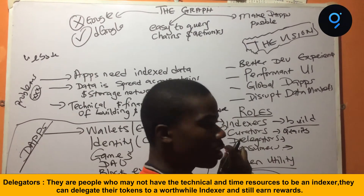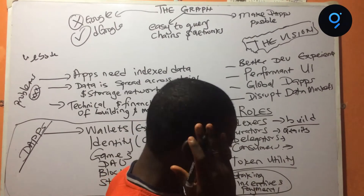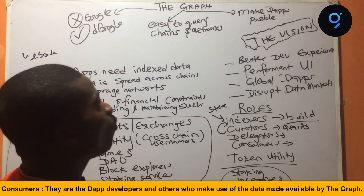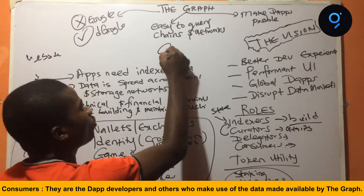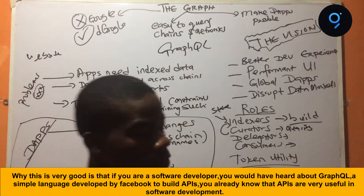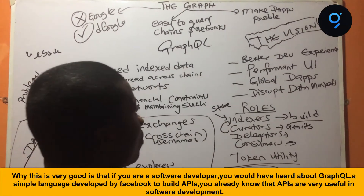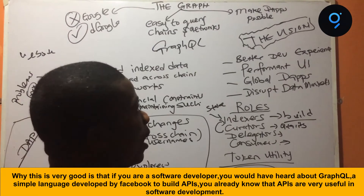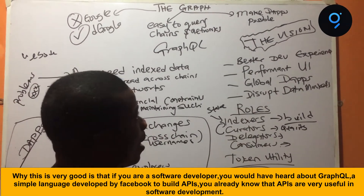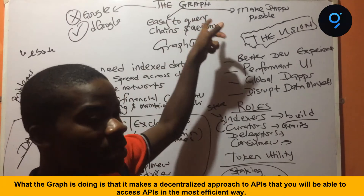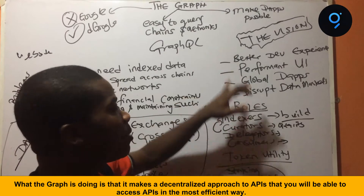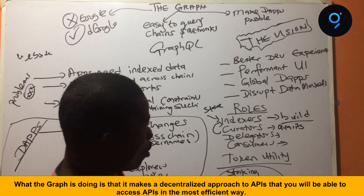And the next people are actually the customers or the consumers. They are the app developers and the rest of them that will want to plug into this API. And one of the reasons why this is very good is that if you're a software developer, you would have heard about GraphQL — the query language developed by Facebook to build APIs. APIs are very useful in software development, and what The Graph is doing is making a decentralized approach to APIs where you can access them in a trustless way.